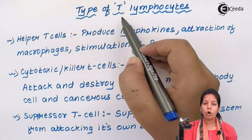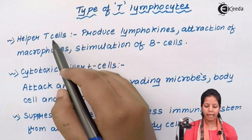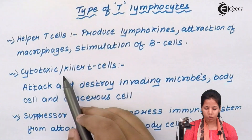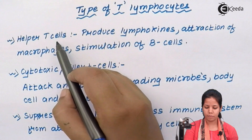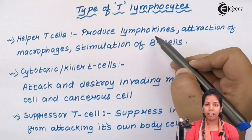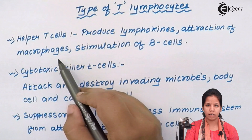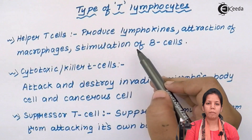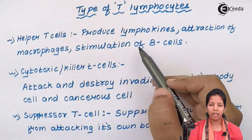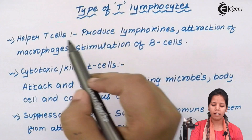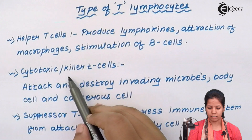T-lymphocytes or T-cells — the four different kinds of T-cells would be helper T-cells, cytotoxic T-cells, and suppressor T-cells. Let's talk about helper T-cells. Helper T-cells basically produce lymphocytes. They are responsible for the attraction of macrophages or phagocytic cells, and stimulation of B-cells is done by helper T-cells. B-cells — which could be plasma B-cells or other invading B-cells — are initiated or activated by helper T-cells. Helper T-cells work in coordination with cytotoxic T-cells or killer T-cells.